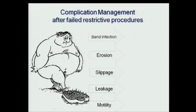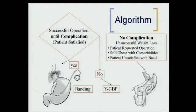The main question is: should we revise them or convert them? Back to my initial statement, it is difficult to make it simple. Our algorithm — I know we all love algorithms, I hate algorithms — we make it simple. If a patient is satisfied with the band, we consider rebanding, if possible. If a patient was never satisfied with the band, we convert them to a Roux-en-Y gastric bypass. We do not perform malabsorptive procedures.